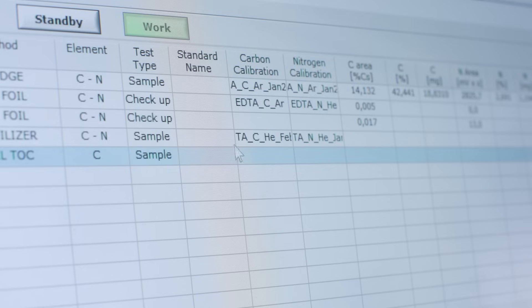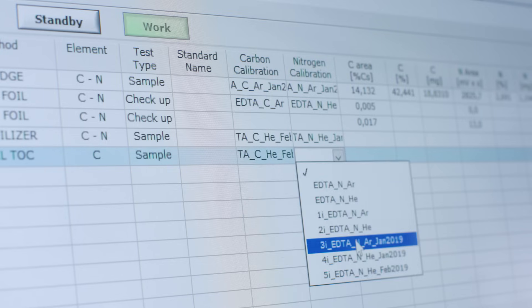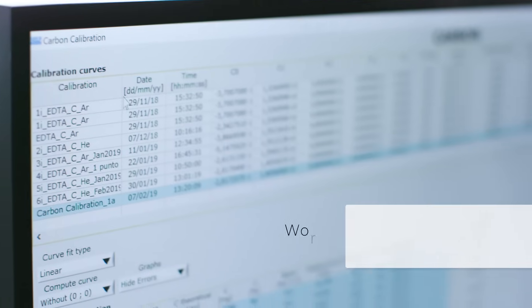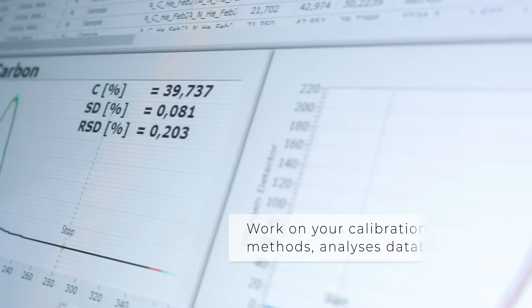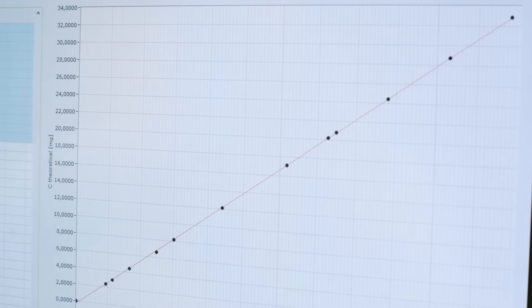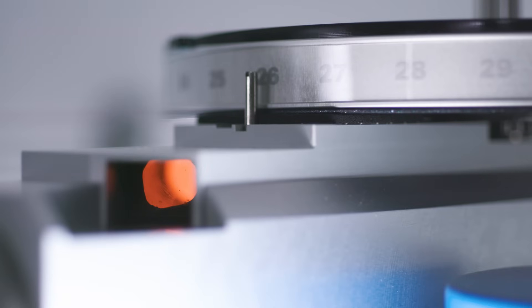Choose from a full library of pre-installed methods or create and save customized methods. An easy calibration curve creation for carbon and nitrogen allows for testing of any sample matrix with no memory effect. Select your sample and press start to begin the analysis.